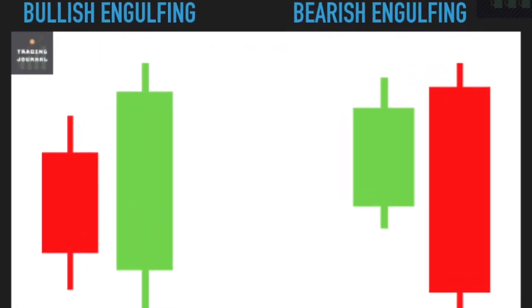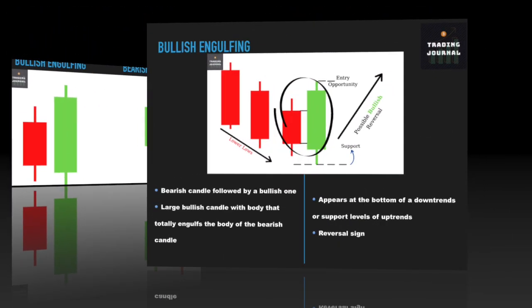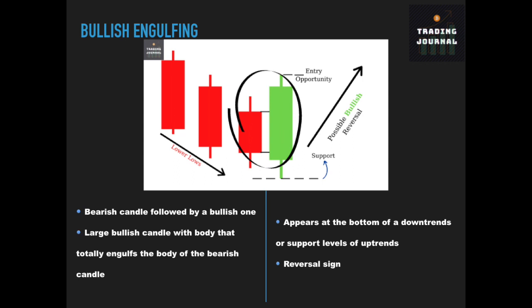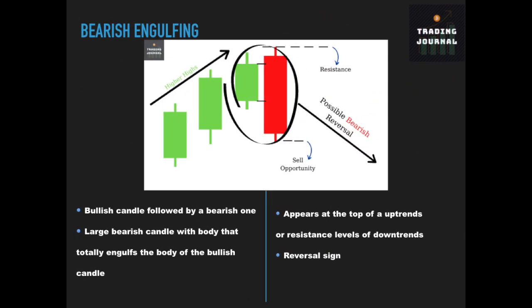Up next are engulfing patterns. Both the bullish and the bearish engulfing patterns consist of two candles. The bullish engulfing starts with a bearish candle followed by a bullish one. The bullish candle has a large body that totally engulfs the body of the bearish candle. The bullish engulfing appears at the support levels of uptrends or at the bottom of downtrends, indicating a high probability that the price will go up. The bearish engulfing is the opposite — it starts with a bullish candle followed by a bearish one, whose body engulfs the body of the bullish candle, indicating a high probability that the price will go down.